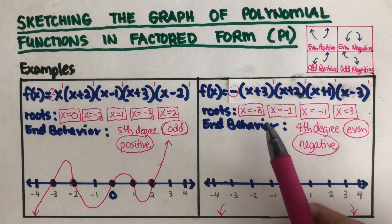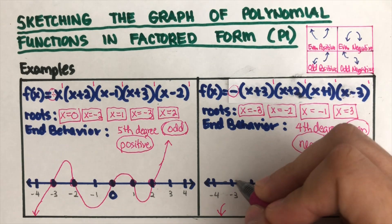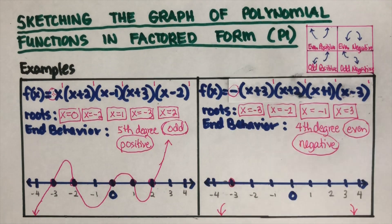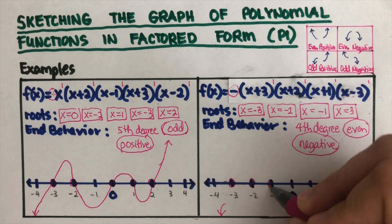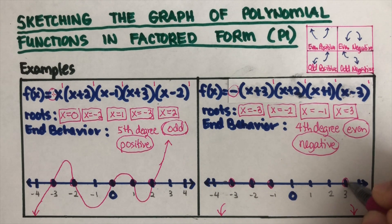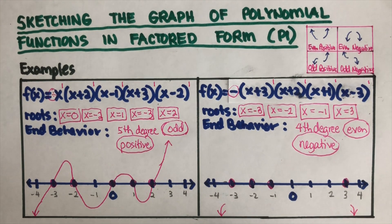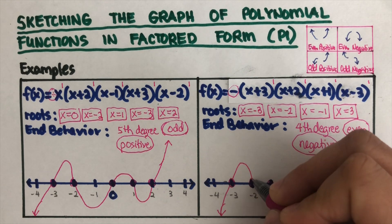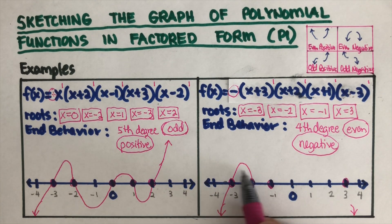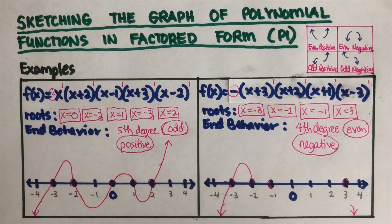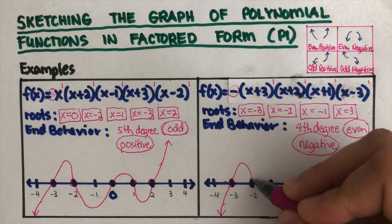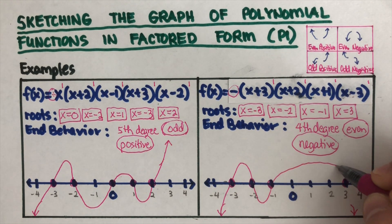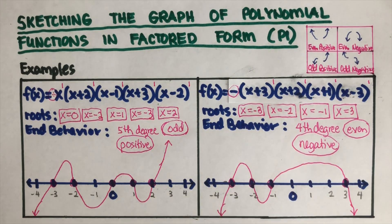Let's sketch the graph. First, we plot the roots: negative three, negative two, negative one, and positive three. We're not concerned how high or low the curve is — there's no y-axis here since we're only graphing on the x-axis. Since it's even negative, both ends go down. We sketch the curve connecting the roots, going down on both ends, and this is the sketch of this polynomial function.